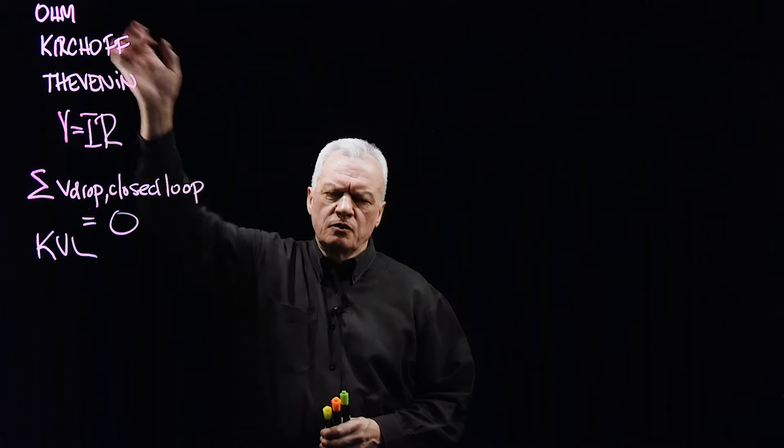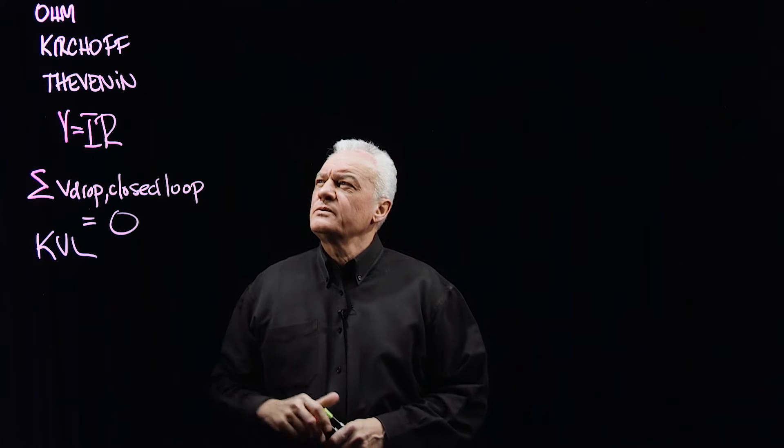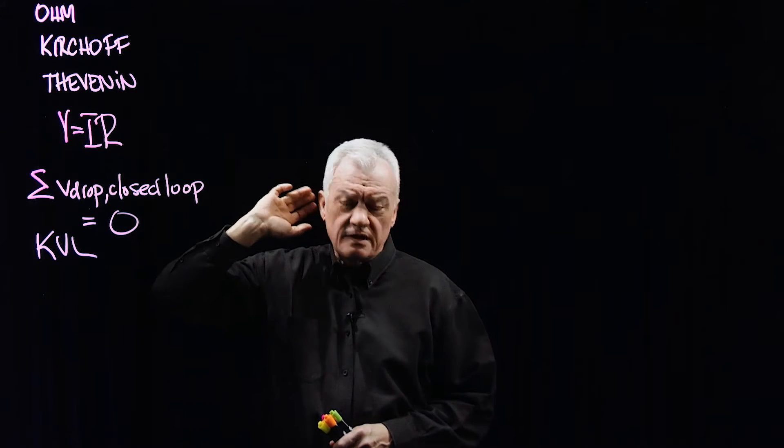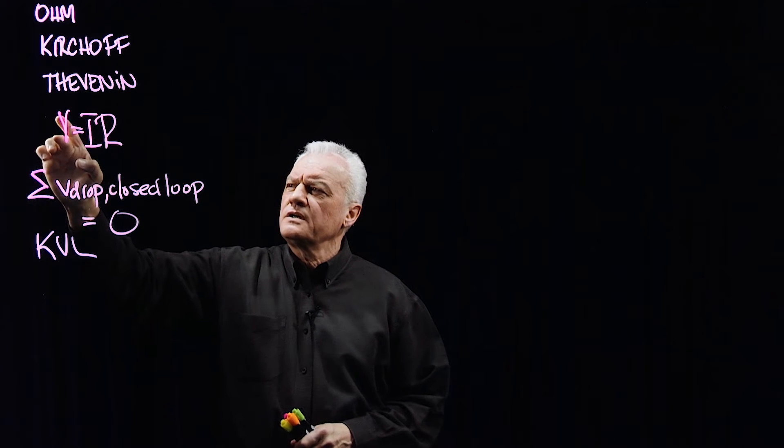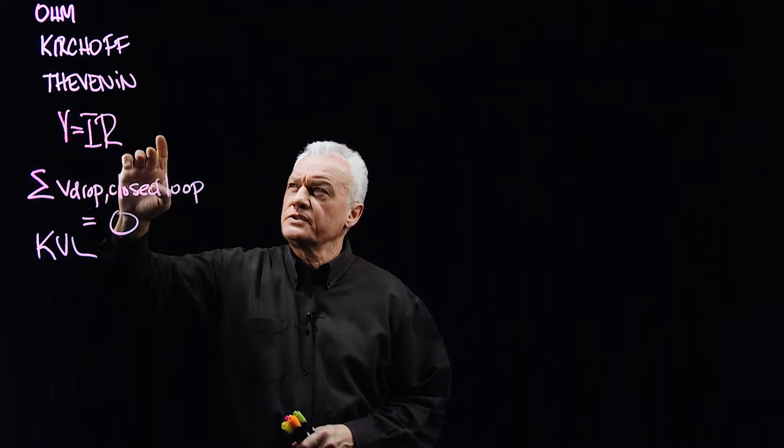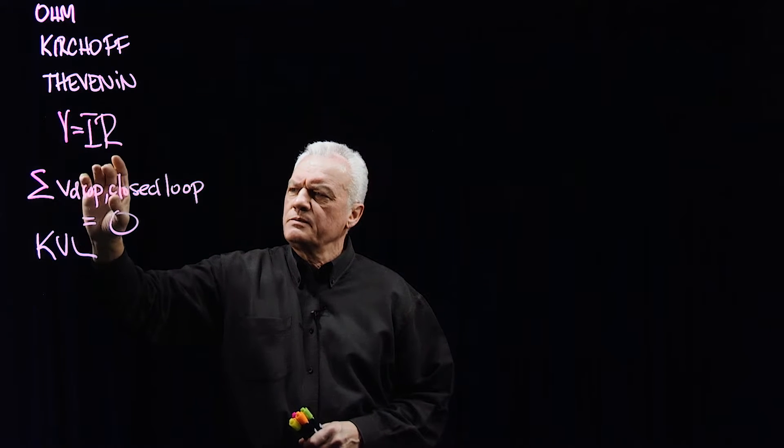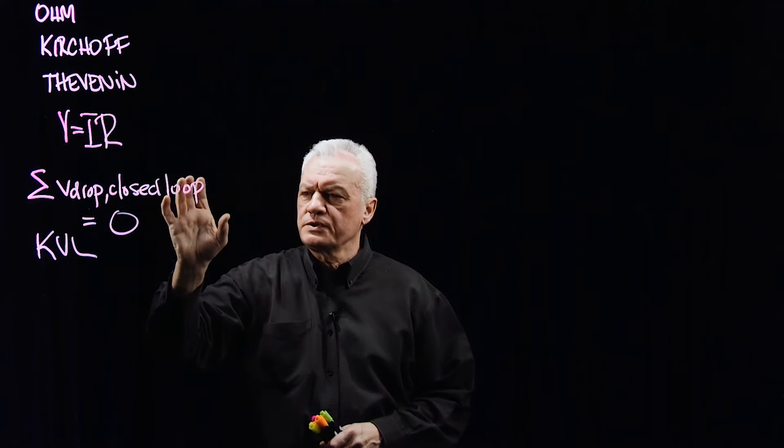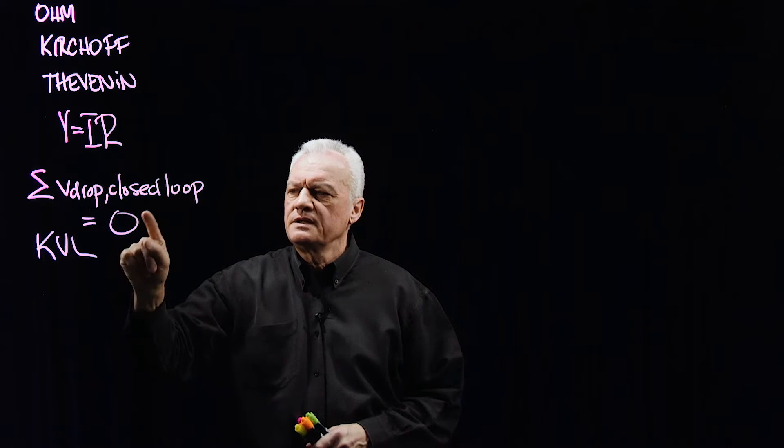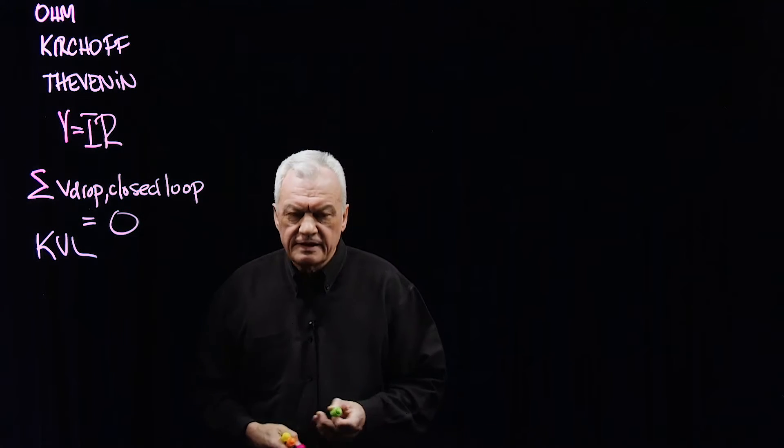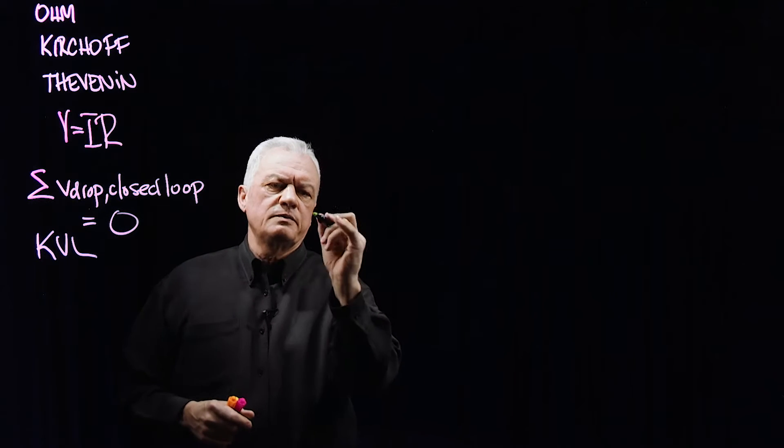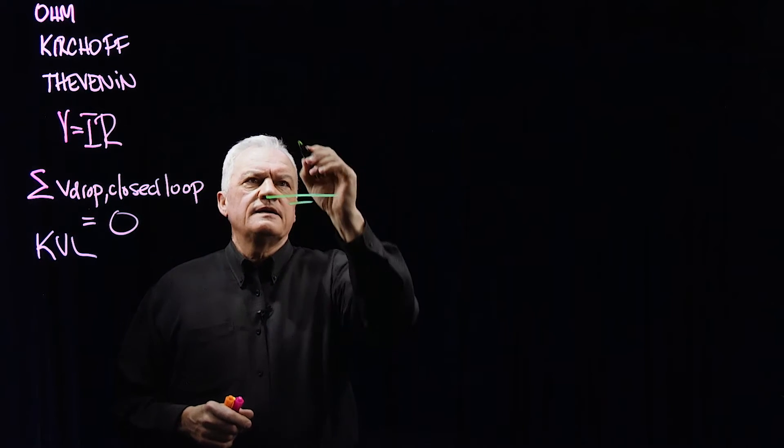We've talked about Ohm, George Simon, and we've talked about Kirchhoff, Gustav Robert Kirchhoff. I want to recall that voltage equals current times resistance from Mr. Ohm, and the sum of the voltage drops around a closed loop circuit where current is flowing is equal to zero, also known as Kirchhoff's voltage laws. Let's take an example of Kirchhoff's voltage laws where we may have to do a little bit of work.